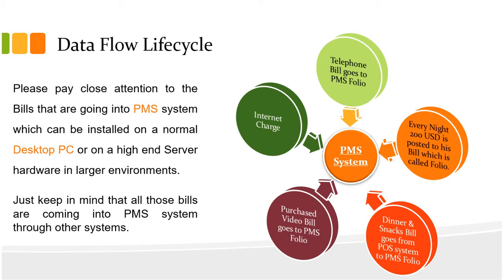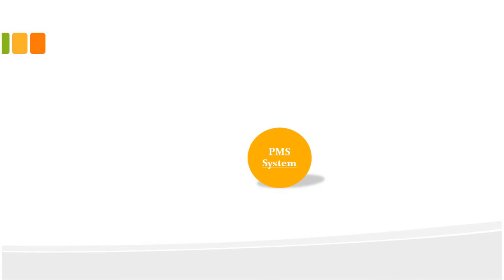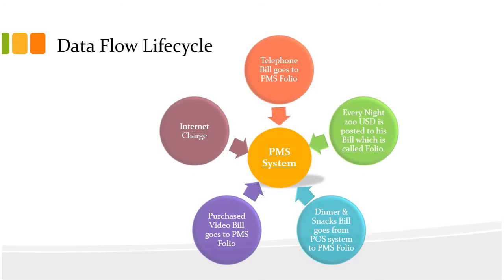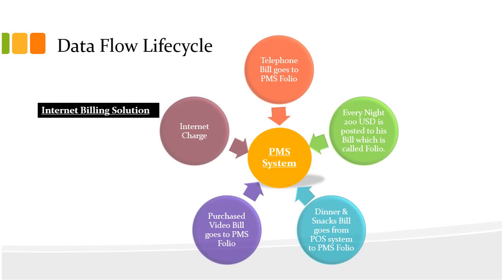The guest watched a movie purchased through the Video on Demand system, so that bill also goes to the PMS folio through the VOD system. The internet charge also goes to the PMS system. So the cycle is: telephone bill, nightly room charge (200 USD), dinner, snacks, video, and internet charges — all posted to the PMS folio.